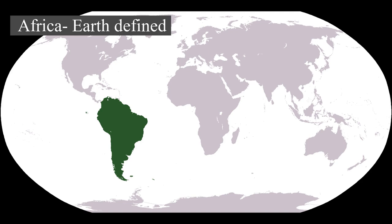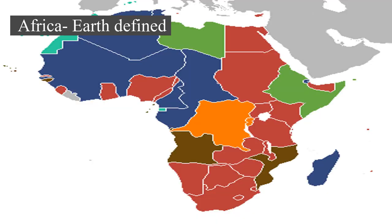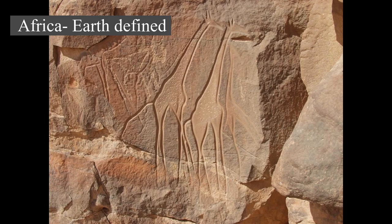Early human civilizations such as ancient Egypt and Carthage emerged in North Africa. Following a subsequent long and complex history of civilizations, migration and trade, Africa hosts a large diversity of ethnicities, cultures, and languages. The last 400 years have witnessed an increasing European influence on the continent.